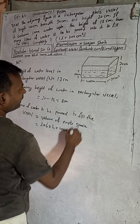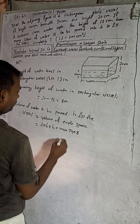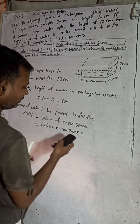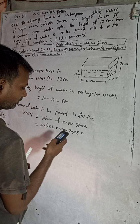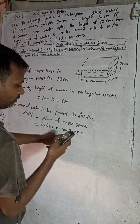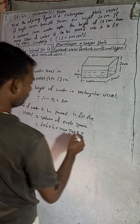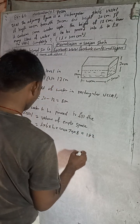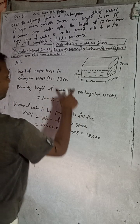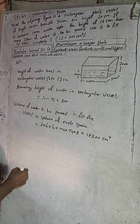So the length is 40, breadth is 30, and height is 8. Multiplying: 40 × 30 = 1200, and 1200 × 8 = 9600. So the volume of empty space is 9600 cm³.